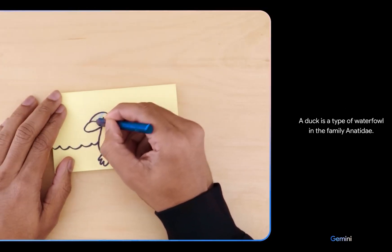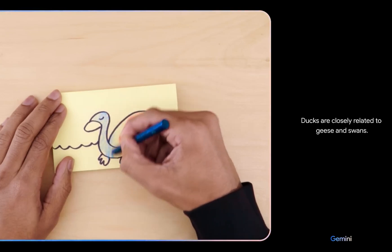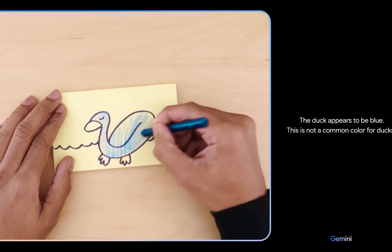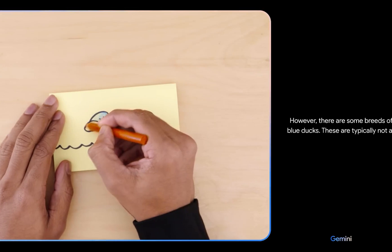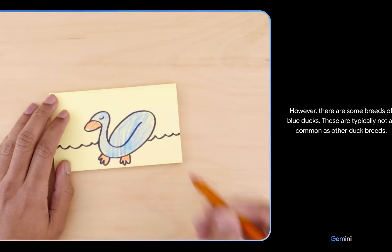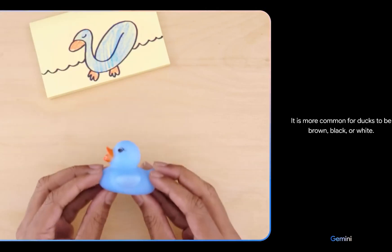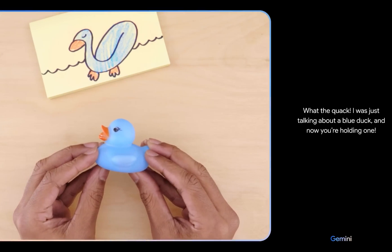A duck is a type of waterfowl in the family Anatidae. Ducks are closely related to geese and swans. The duck appears to be blue. This is not a common color for ducks; however, there are some breeds of blue ducks. These are typically not as common as other duck breeds. It is more common for ducks to be brown, black, or white. Are you sure? What the quack! I was just talking about a blue duck and now you're holding one.